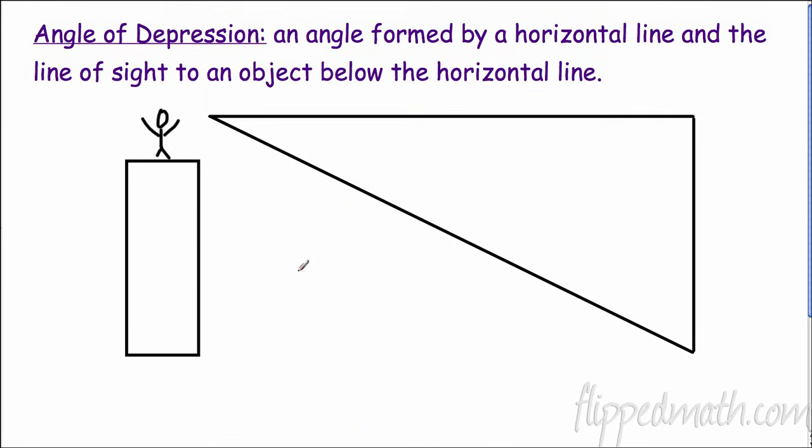Angle of depression. We talked about angle of elevation, now we're going to talk about angle of depression. Angle of depression is a little bit trickier. An angle formed by a horizontal line - so here's my guy, here's the horizontal line from him - and the line of sight to an object. So here's the line of sight, here's what he's looking at. So the angle that's formed right there, that's the angle of depression.